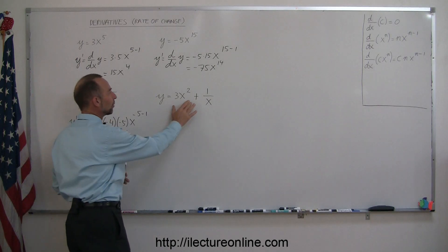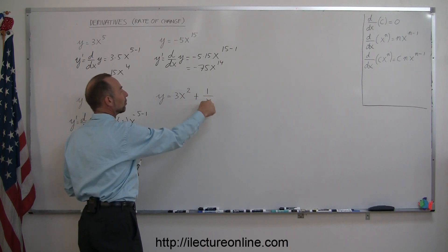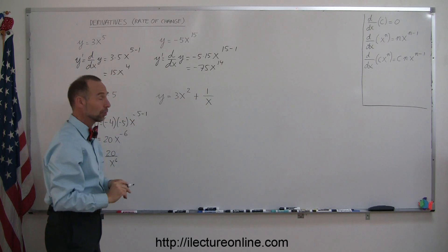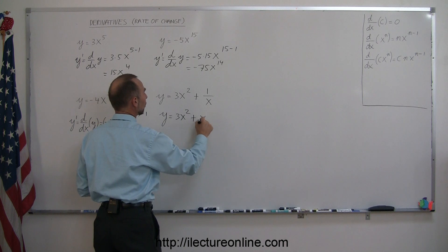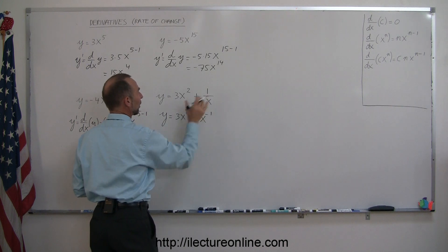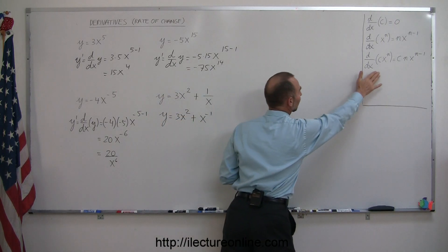Now you can see that this is the sum of two terms, and before we take the derivative here, we're going to rewrite this with x in the numerator and a negative exponent. So we rewrite this problem as y equals 3x squared plus x to the minus 1 power, which is the same as what we have over there. And now we again employ the rules that we have here to the side.